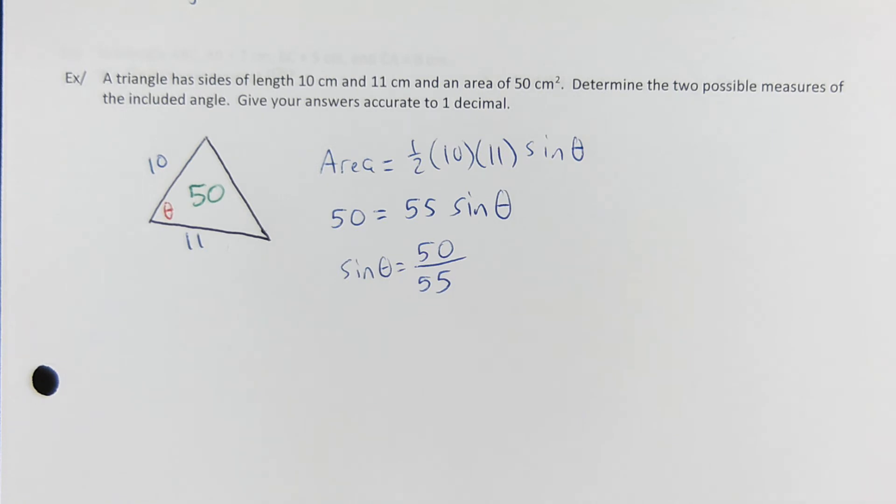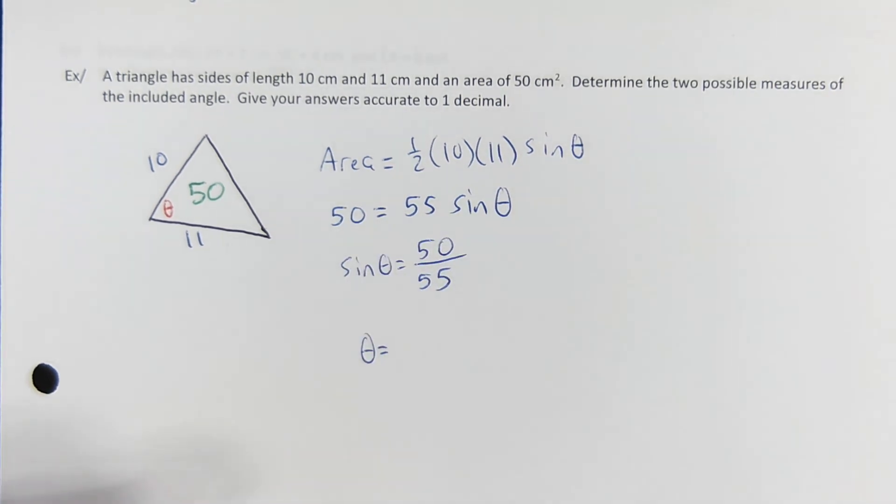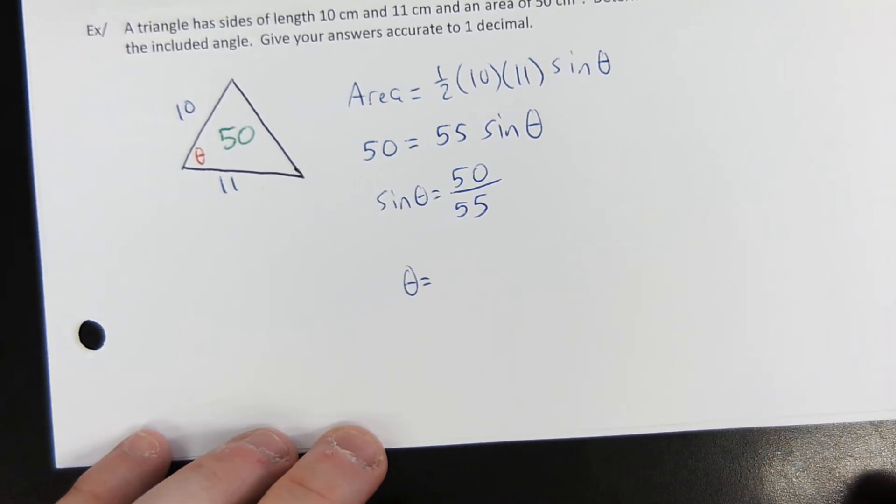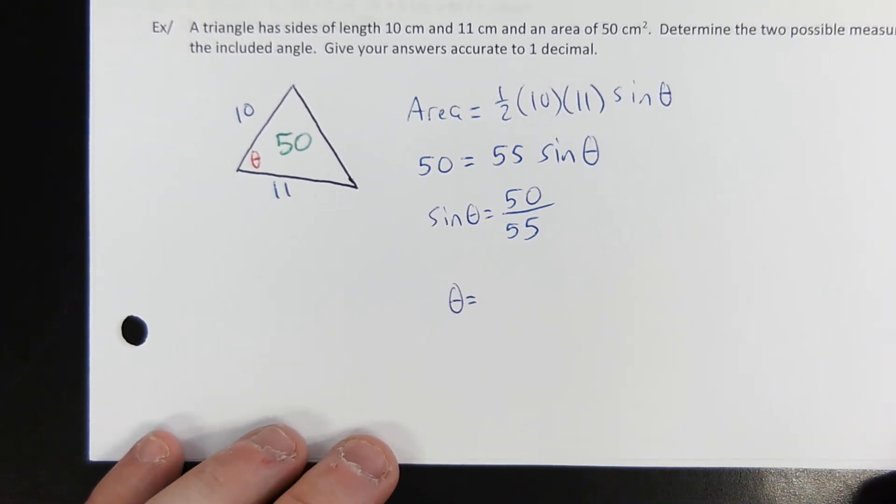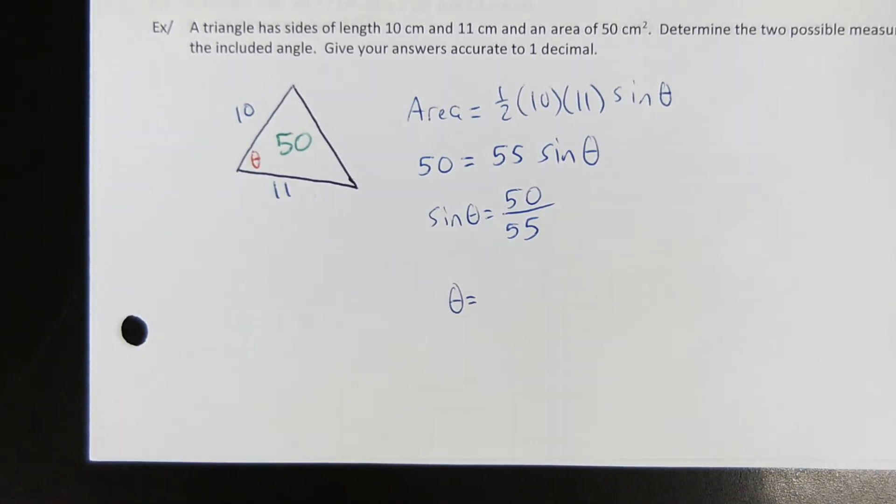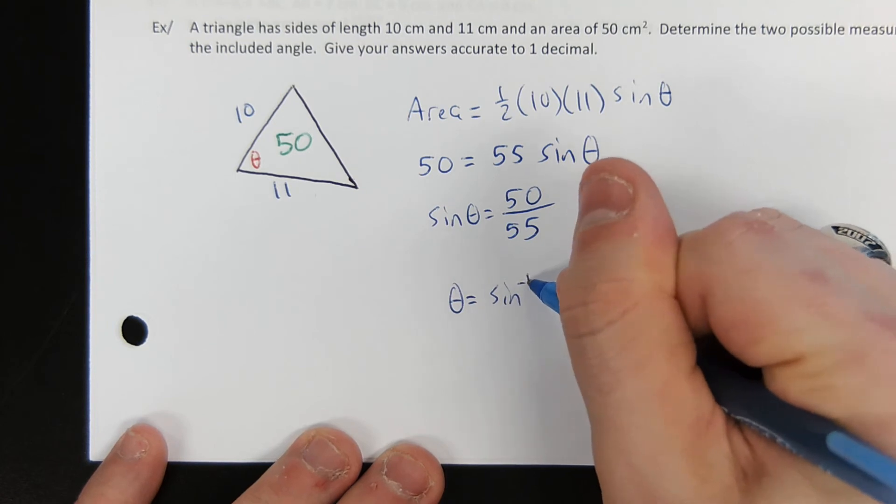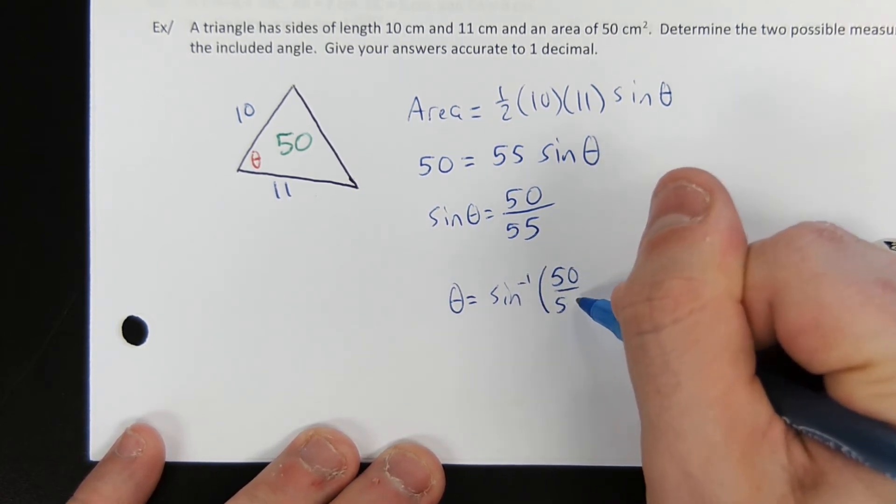This is not a special right triangle of any kind, so how am I going to isolate theta, which is what I'm trying to find? Inverse sine. I'm going to have to use sine inverse or arc sine or whatever you want to call it. So theta equals, you would take the sine inverse of both sides. Theta equals sine inverse of 50 over 55.